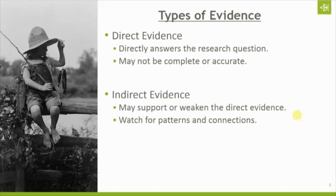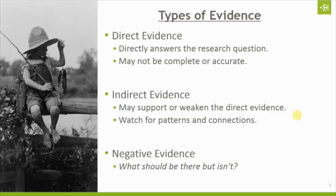Understanding these two types of evidence is critical to lead us up to negative evidence. The easiest way to explain negative evidence is to ask the question: what should be there but isn't? I want you to start wrapping your head around this idea that blank space means something. Elizabeth Shown Mills uses the example of Sherlock Holmes and his famous statement about the dog not barking. The dog not barking means something, and so we have to keep that in mind as we look for information in the sources we're using for our family history.